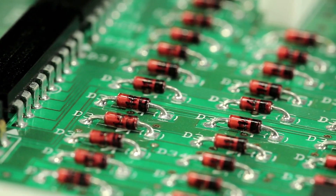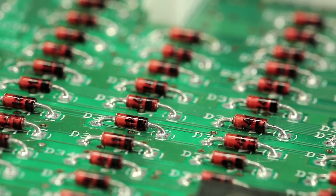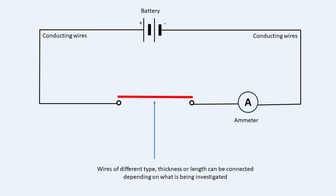To investigate the effect of material type on resistance, a simple series circuit can be constructed using a battery, an ammeter, a light bulb or LED, and conducting wires. Copper and nichrome wires of equal length and thickness can be tested — each wire is connected into the circuit and the current measured using an ammeter. Since the voltage from the battery remains constant, lower current readings indicate higher resistance. The hypothesis would be that copper, being a better conductor, would allow more current to flow than nichrome. The independent variable is the type of conductor, the dependent variable is the current reading, and the controlled variables are the length and thickness of the wires, the battery voltage, and the temperature. The same experimental setup can also be used to investigate how length and thickness of the wire affect resistance.